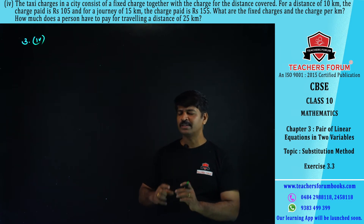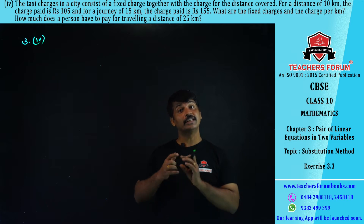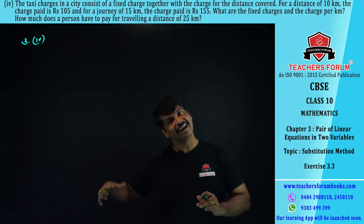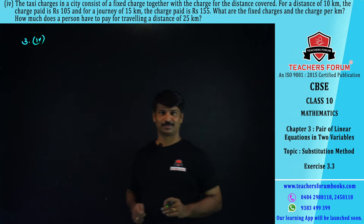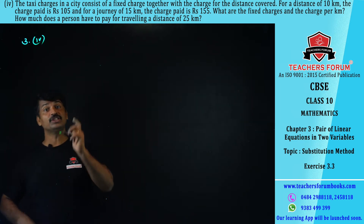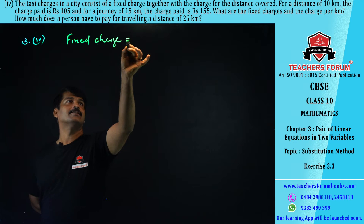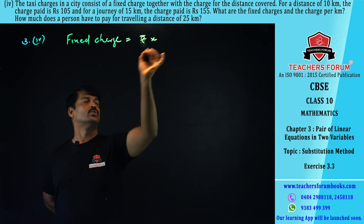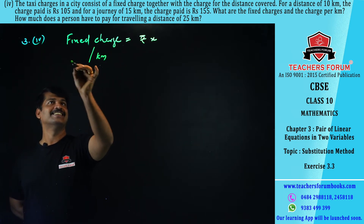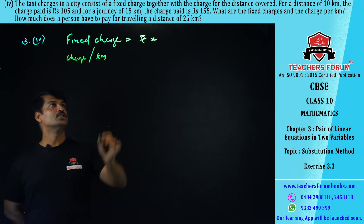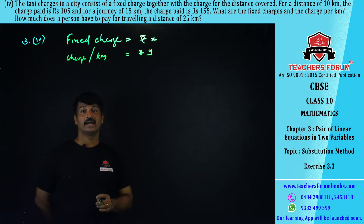Whether you travel 1 kilometer or 100 kilometers, there is always a fixed charge, and in addition you pay per kilometer. So there are two charges: a fixed charge and a per-kilometer charge. We assume the fixed charge is rupees x and the charge per kilometer is rupees y.